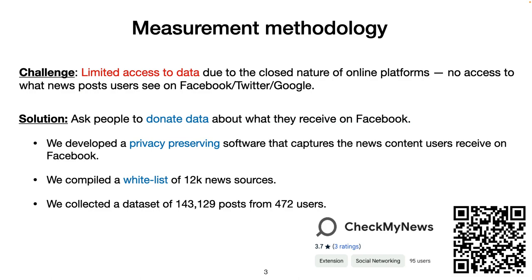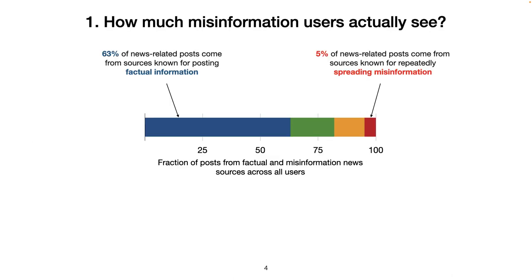Using this tool, we build a large dataset that we use to provide much-needed answers to long-standing questions regarding how users are exposed to and interact with posts of different quality and political leanings. Here is a small summary of some of our findings. First, we observed that on average, 63% of the news users see are from factual news sources, while 5% are from misinformation sources.